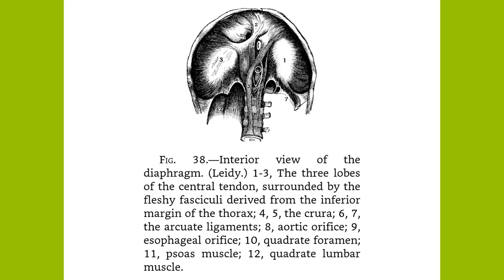Mammary Glands. On the outside of the chest walls, lodged in the fascia of the pectoral muscles, are the mammary glands, accessory organs of the generative system. They exist in both sexes but are only rudimentary in the male. In the female, they are small before puberty but enlarge as the generative organs become more completely developed, forming two hemispherical eminences, one on either side between the third and seventh ribs.